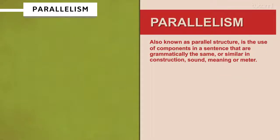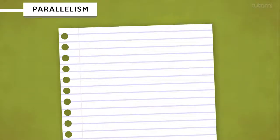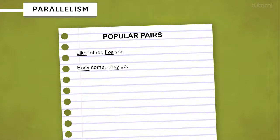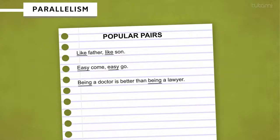Now moving on to parallelism, also known as parallel structure — the use of components in a sentence that are grammatically the same or similar in construction, sound, meaning, or meter. Examples of parallelism could look like these popular pairs: "Like father, like son." "Easy come, easy go." "Being a doctor is better than being a lawyer." "As tall as a tree."